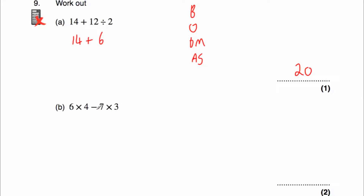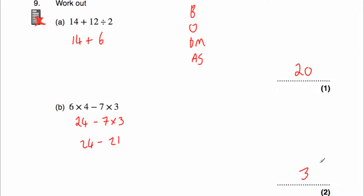Question 9b has two multiplications. Working left to right: 6 times 4 is 24. Then we have take away 7 multiplied by 3, so next we do 7 times 3 which is 21. Then 24 take away 21 is 3. Our answer is 3.